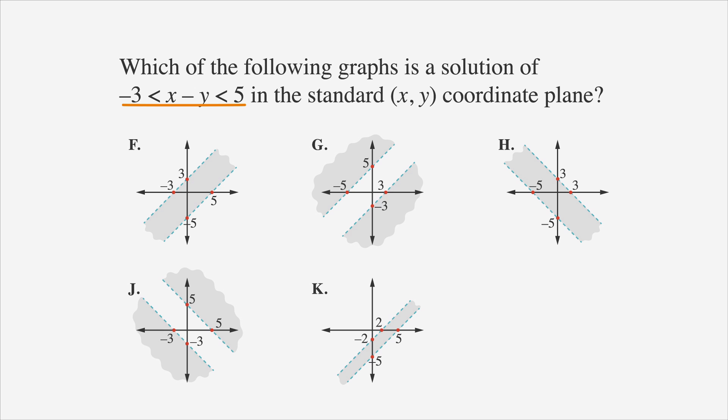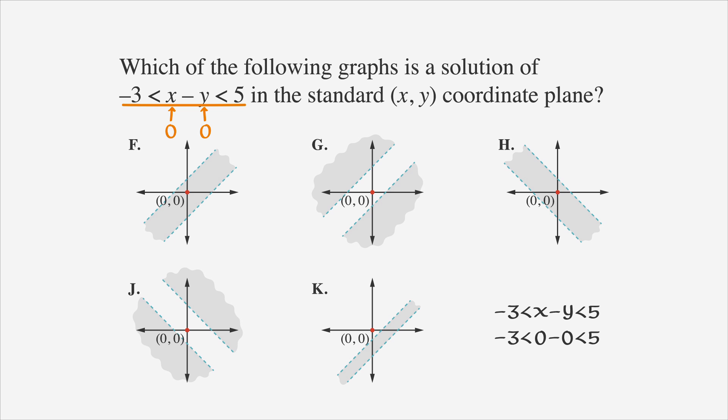The shaded regions of each graph are the solutions of the inequality. All points in the correctly shaded region should make the inequality true. Let's try a couple of points. The origin is usually the easiest point to try first. At the origin, x equals 0 and y equals 0. Putting these numbers into the equation, we get negative 3 is less than 0 minus 0 and less than 5. That's true — zero is between negative 3 and 5. So the point (0, 0) must be in the shaded region of the correct answer choice.